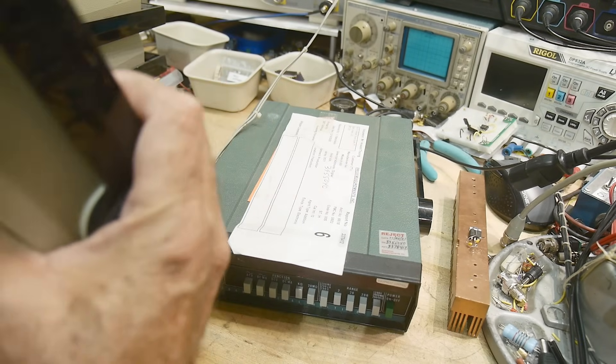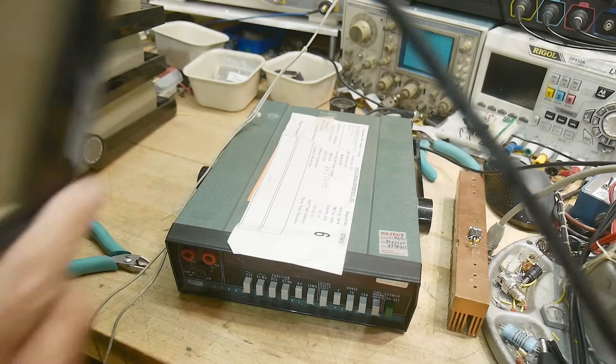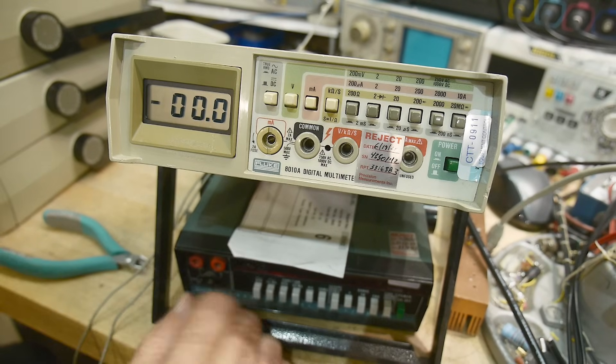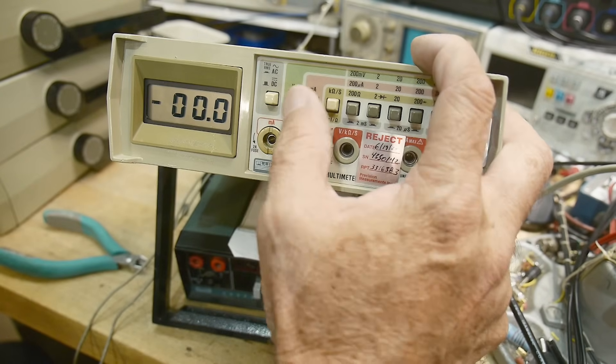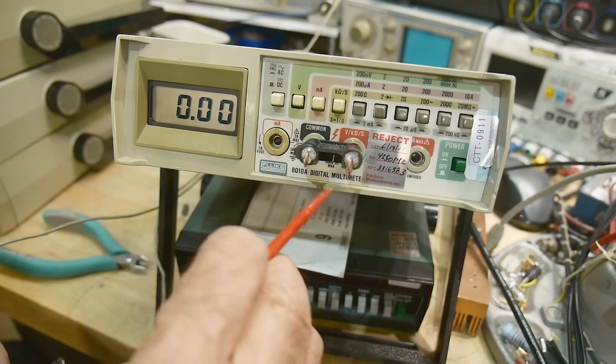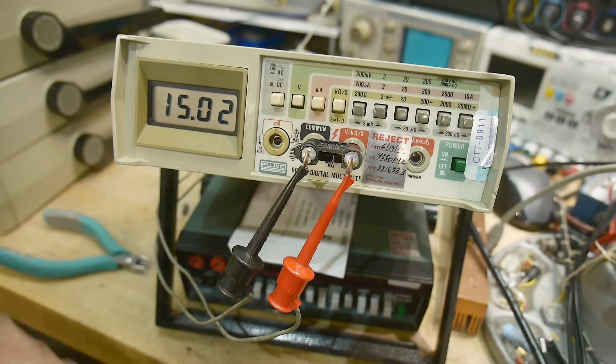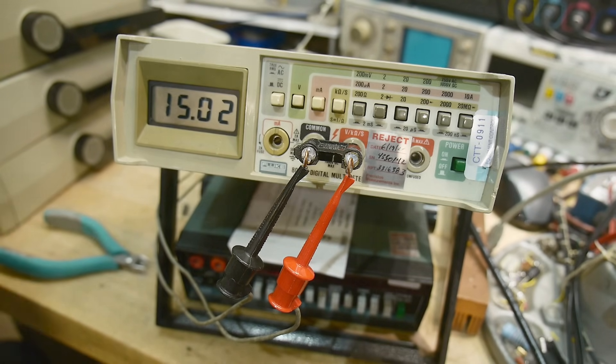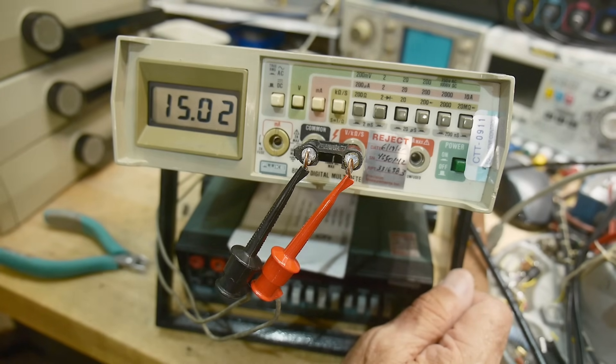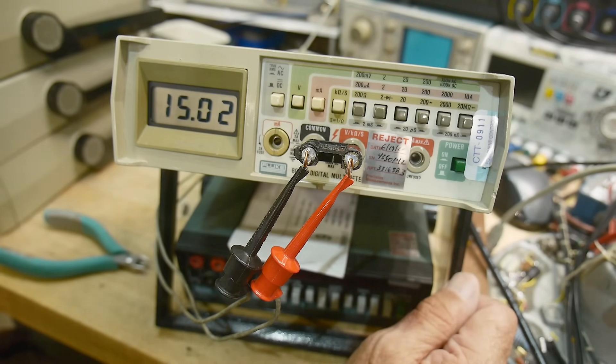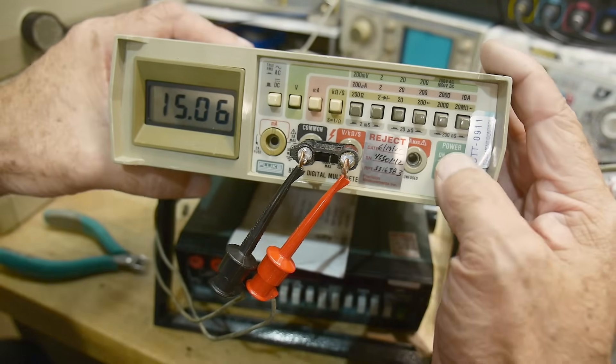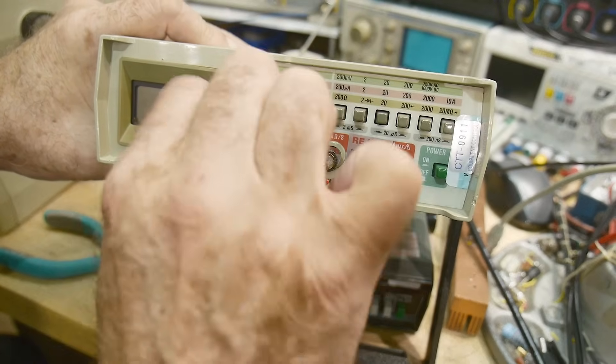All right. This one says reject, but I don't know why. So let's give him a try. Okay. Ooh, nice looking display. Volts. 20. Common. Let's put something on it. 15 volts. Perfect. Okay. So maybe this one's okay. Even though it has a reject sticker on it. Don't know why. Milliamps. A lot of times people don't even know these have fuses in the front. And they think they're dead because the milliamps don't work.